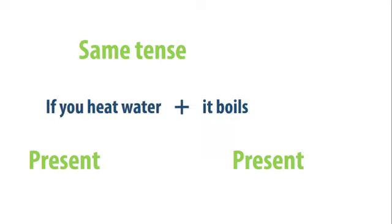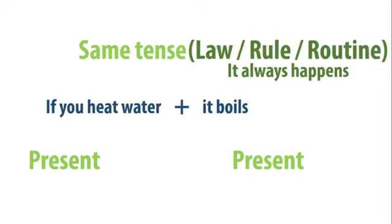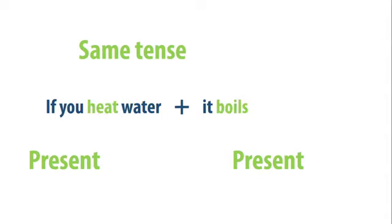Un ejemplo es if you heat water, it boils. Observa que aquí hablamos de algo que siempre pasa. Puede ser una ley, una regla, una rutina, algo que siempre pasa. If you heat water, it boils. Los dos verbos están en presente: heat y boils. Aquí, como son presente en terceras personas, tienes que ponerle la S. Si tú calientas agua, hierve. Es lo que dice aquí. Siempre.